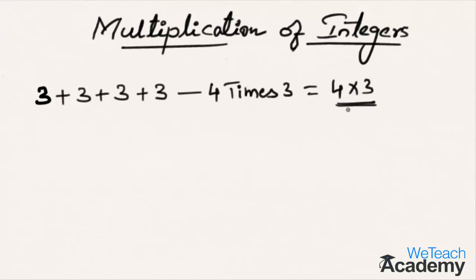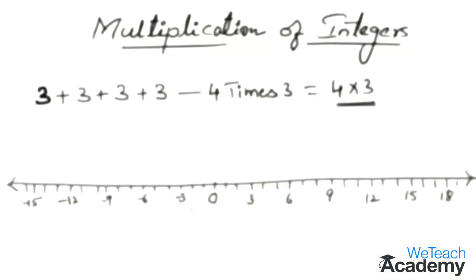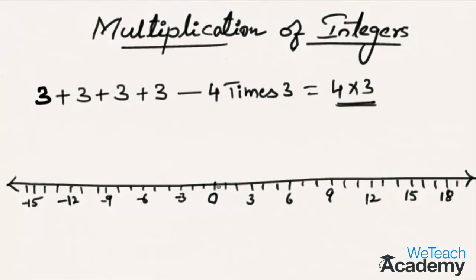Let me draw a number line and try to explain in an easy manner. On the number line we have negative numbers on the left side from 0 and positive numbers on the right side from 0. Here 4 multiplied by 3 is nothing but 4 jumps each of 3 steps from 0 towards the right on the number line.